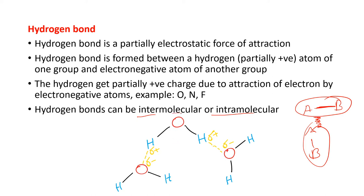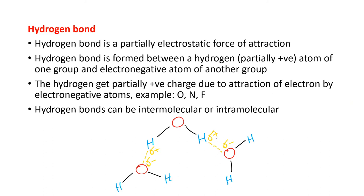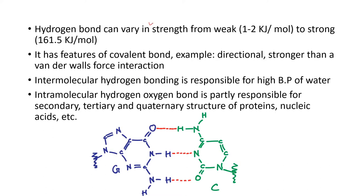This is a structure of the water molecule — this is one water molecule and this is another. Between these two water molecules there is a hydrogen bond, shown in light yellow color. The hydrogen bond varies in strength from weak — about 1 to 2 kilojoules per mole — to stronger, about 161.5 kilojoules per mole.